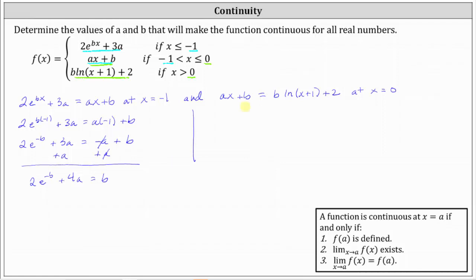So going to the second condition, we will substitute zero for x, which gives us a times zero plus b equals b times natural log of the quantity zero plus one plus two. Simplifying, a times zero is zero, giving us b equals, on the right, notice we have natural log one. Well, natural log one is equal to zero. For a quick review, remember natural log is log base e. The reason natural log one is zero is because e to the power of zero is equal to one. So if natural log one is zero, we have b times zero, which is zero, and we're left with b equals two.